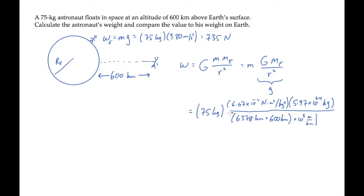To find that the astronaut's weight when he's in orbit is 613 newtons. That's about 83% of his weight on Earth. However, he feels weightless because he's in free fall as he orbits the Earth.